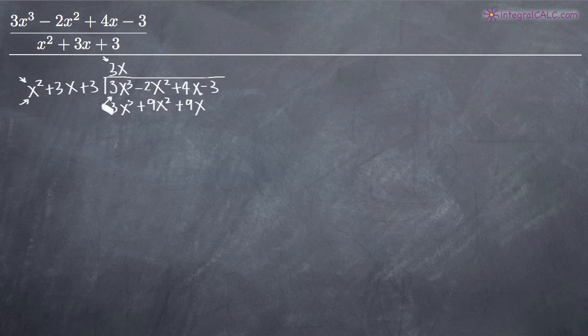Once we've multiplied through, we subtract this polynomial from the one above it. We get 3x³ - 3x³, so we get zero. That was the whole point of finding 3x—we wanted these terms to cancel.